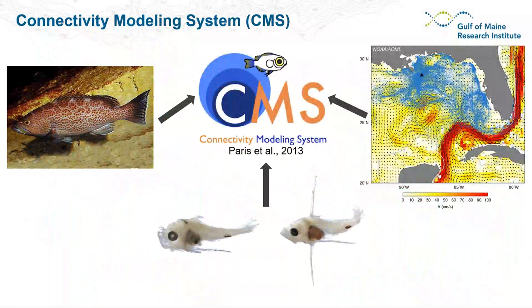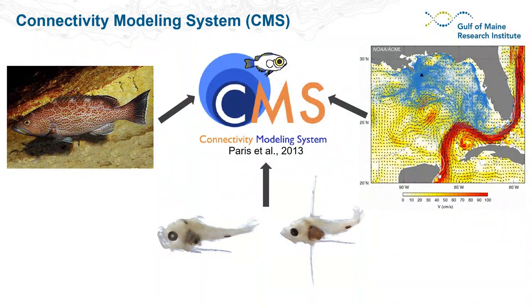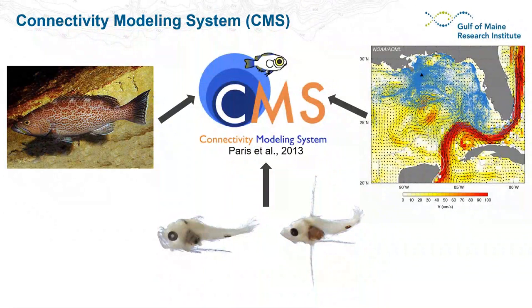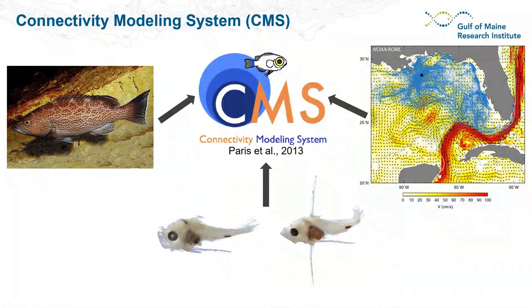To simulate larval dispersal we use an open source particle tracking software called the Connectivity Modeling System, or CMS. CMS is specifically designed to simulate complex larval dispersal. It integrates reproductive ecology — the location and timing of spawning — with larval behavior, physiology, and other aspects of larval dynamics: how large the larvae are, where they're situated vertically in the water column, their pelagic larval duration, and what settlement requirements they have. It integrates these biological aspects with output from hydrodynamic models and simulates larval dispersal from spawning to settlement.